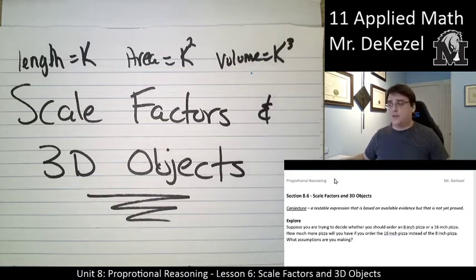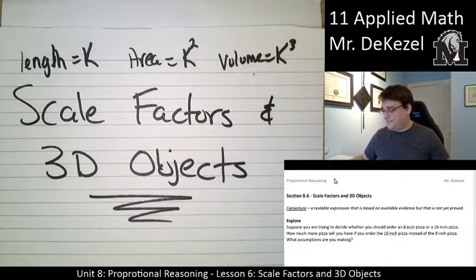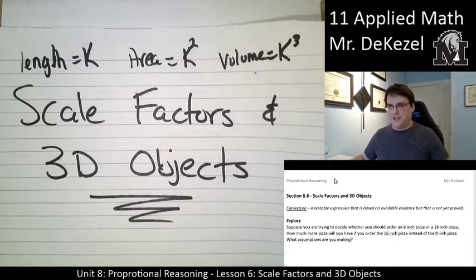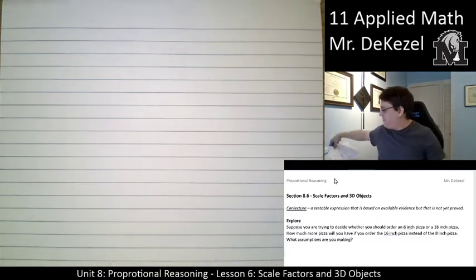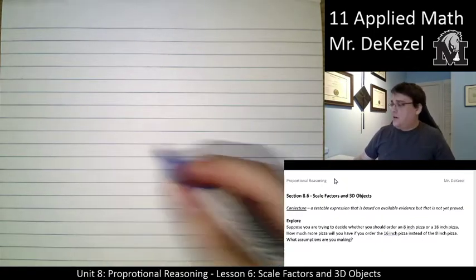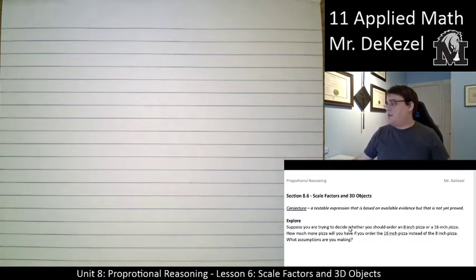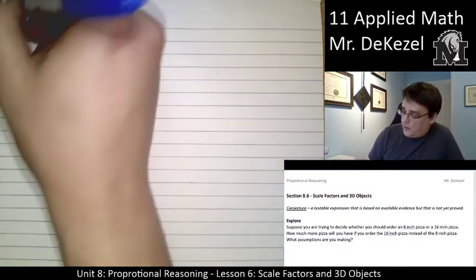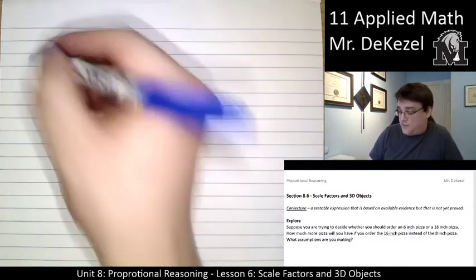First thing I'm going to do is I'm going to use a pizza example to kind of show you how we can use this stuff in real life. So, we have, we're trying to decide what we should order, an 8 inch or a 16 inch pizza, and how much more pizza we'll have if we order the 16 inch instead of the 8. We are going to assume that the entire thing is pizza and that the crust is the same for each.